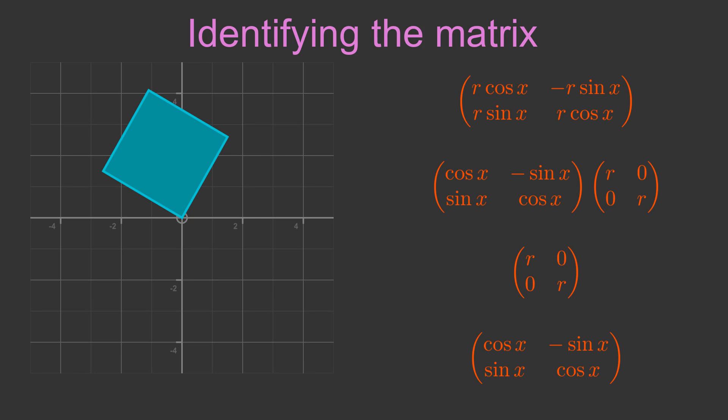Complex numbers have many properties, and have uses in many branches of mathematics and science. One of those properties is the ability to easily and intuitively represent scaling and rotation.